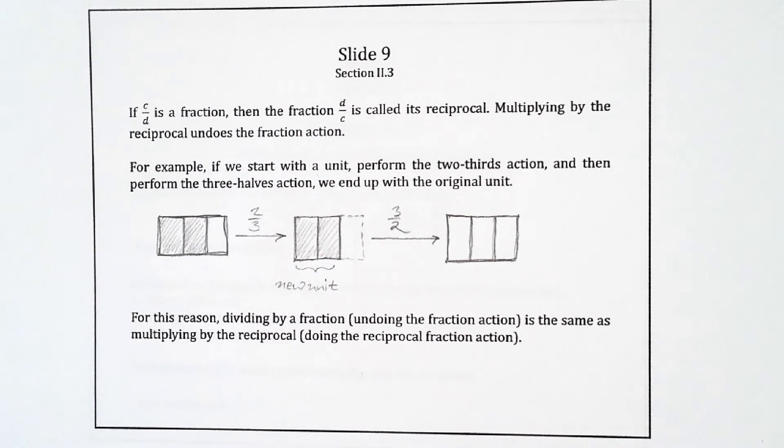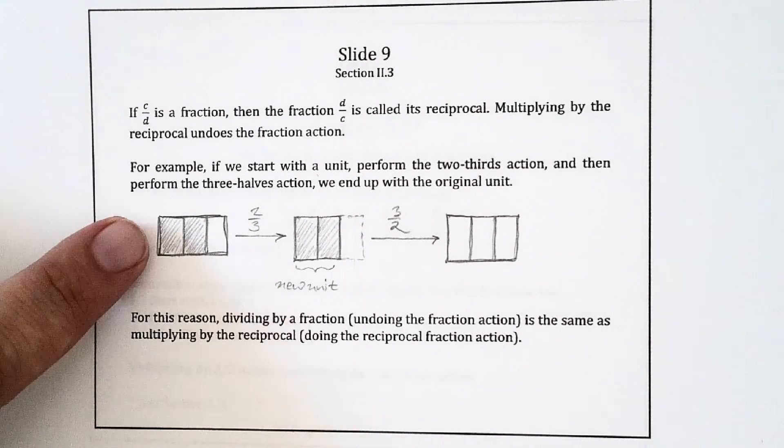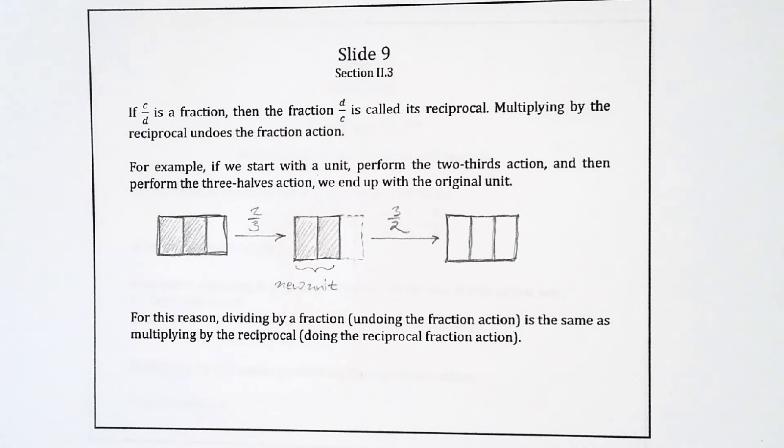So if I perform the two-thirds action and then I perform the three-halves action, I end up with what I started with. So these actions kind of undo each other. So dividing by a fraction is the same as multiplying by the reciprocal, right? When you divide by something, you're undoing a multiplication. So when we divide by a fraction, we're undoing the fraction action. But undoing the fraction action is the same as doing the reciprocal fraction action. And doing the reciprocal fraction action is the same as multiplying by the reciprocal. So this is a way of understanding why multiplying by the reciprocal accomplishes the same thing as dividing by the fraction.